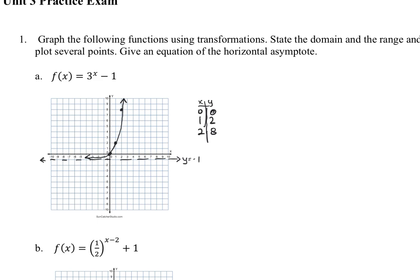Three points are required: the y-intercept and two others. This is an example of exponential growth because the base is bigger than 1. The domain of any exponential function is all real numbers, or negative infinity to positive infinity. The range depends on the horizontal asymptote — since the asymptote is at negative 1, there are no y-values lower than negative 1, and the graph never equals negative 1, so the range is from negative 1 to infinity.